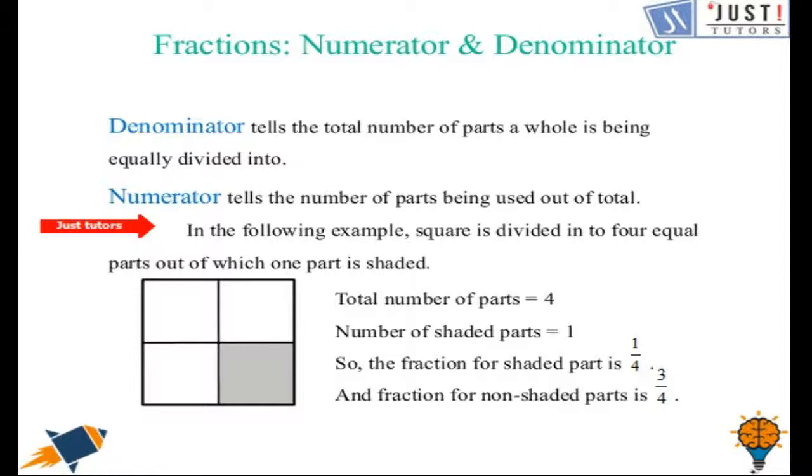Let's suppose if we need to write the fraction of the shaded part as we have one box shaded. So numerator will be 1 and denominator will be 4 as we have in total 4 parts. So fraction for shaded part is 1 over 4, that is a quarter. And fraction for non-shaded part is 3 over 4 because we have 3 non-shaded parts.